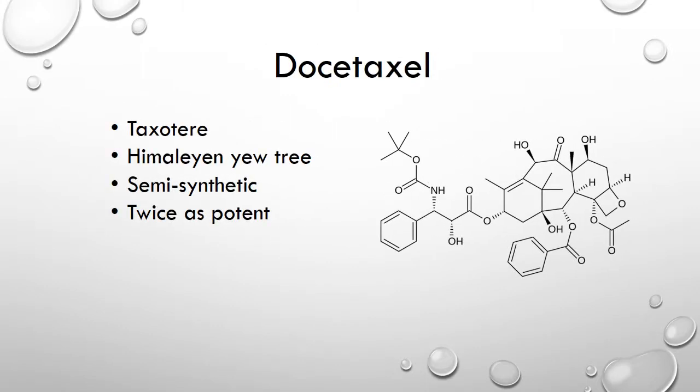Docetaxel is a semi-synthetic form of Taxol. It is isolated from the twigs and needles of the Himalayan yew tree, developed as a result of the small yield and expensive process of gathering Paclitaxel. It was approved by the FDA in 1995. It is also known for being twice as potent as Paclitaxel due to the drug's effect on the centrosome of the mitotic spindle. It is used to treat breast, head and neck, gastric, some prostate, and ovarian cancers. The side effects are more severe but shorter lived than Paclitaxel.